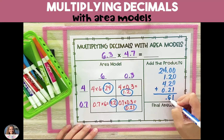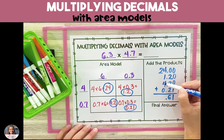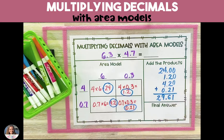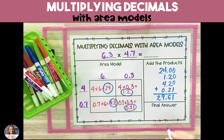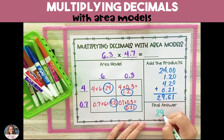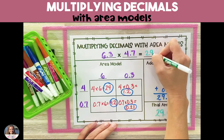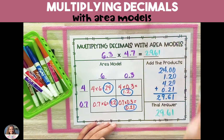Bring the decimal straight down in your addition problem, add up each place value, and your final answer is 29 and 61 hundredths.